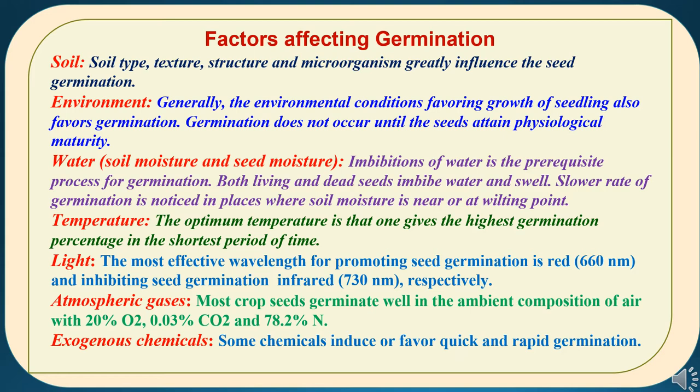The seventh factor is exogenous chemicals. Some chemicals induce or favor quick and rapid germination. All these factors — good combinations of soil, environment, water, temperature, light, atmospheric conditions, and chemicals — will impact the germination.